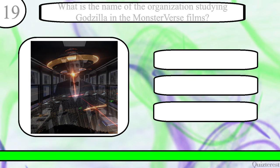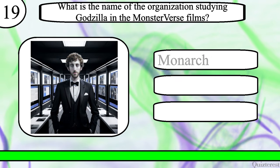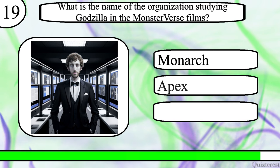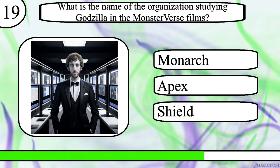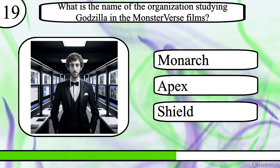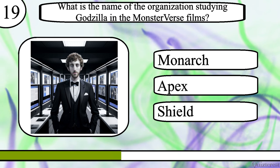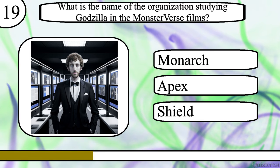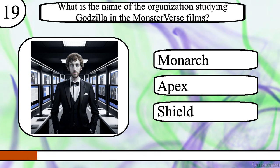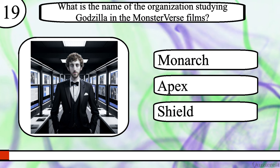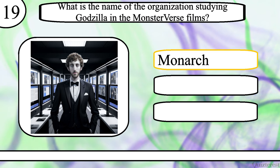Question 19. What is the name of the organization studying Godzilla in the MonsterVerse films? Monarch, Apex, or Shield? The correct answer is Monarch.